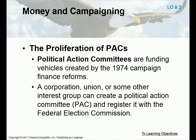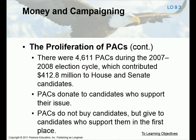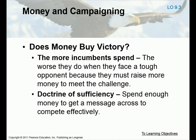Political action committees are funding vehicles created by the 1974 campaign finance reforms. A corporation, a union, or some other interest group can create a PAC and register it with the Federal Election Commission. There were 4,611 PACs in the 2007-2008 election cycle, and those PACs contributed $412.8 million to House and Senate candidates. Political action committees donate to candidates who support their issue — they expect something in return. They don't officially buy those candidates, but they give support to those candidates who they feel are going to support them in the future. In other words, they are buying the candidate, just not officially — it is a very contentious situation.